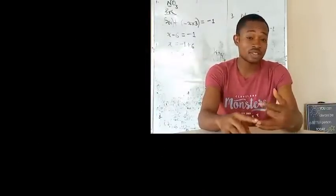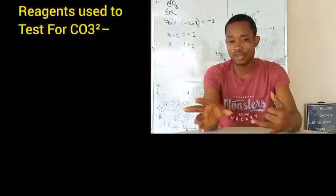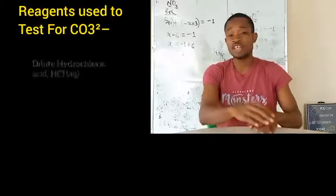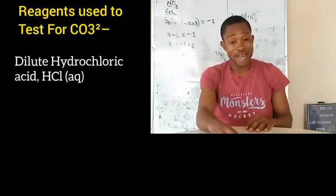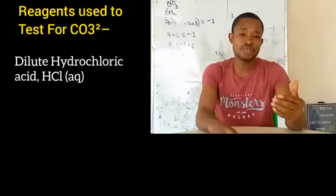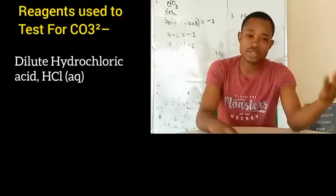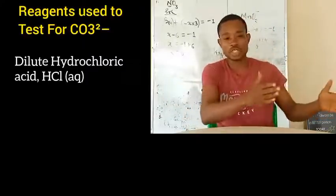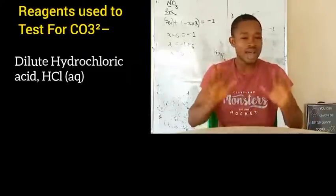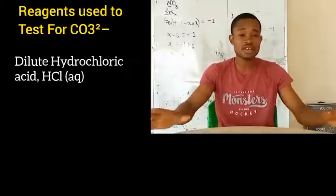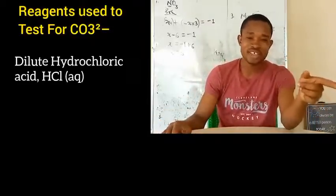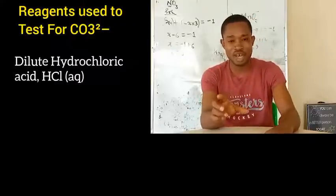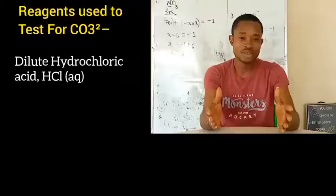Let us now talk about the second negative anion — trioxocarbonate(IV) anion, CO₃²⁻. What do we use to carry out the confirmatory test for this anion? We use dilute hydrochloric acid — that is just what we use. So if as a student you are given a salt sample and the instruction simply tells you to add dilute hydrochloric acid — no other reagent — then you should know that the anion present is CO₃²⁻.